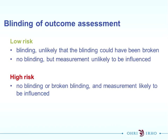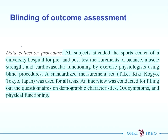Low risk of bias, very similar to performance bias, is that blinding has occurred and is unlikely to be broken, or that there's no blinding but the outcomes are very objective - so outcome measures are not likely to be influenced by lack of blinding, for example mortality. High risk of bias is no blinding or broken blinding and the measurement is likely to be influenced - so self-reported or subjective outcomes. In the RCT example under the data collection procedure subheading: all subjects attended the Sports Centre for pre and post test measures of balance, muscle strength and cardiovascular functioning by exercise physiologists using blind procedures.